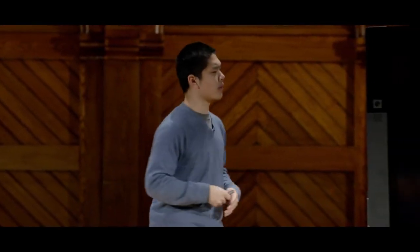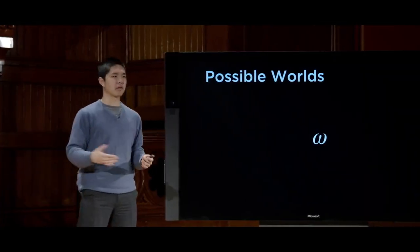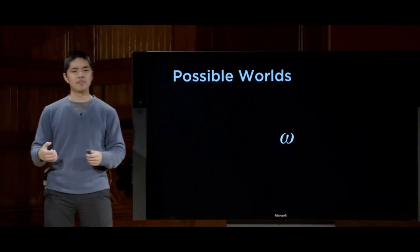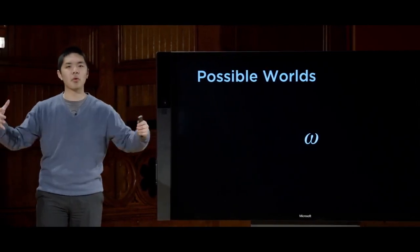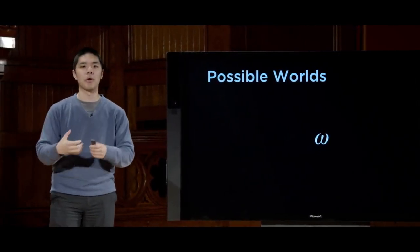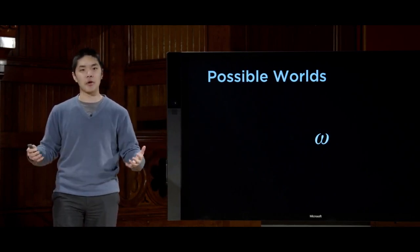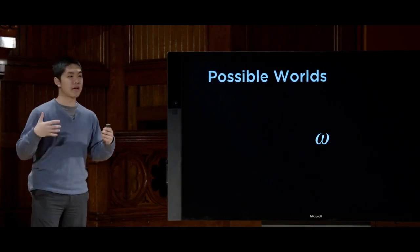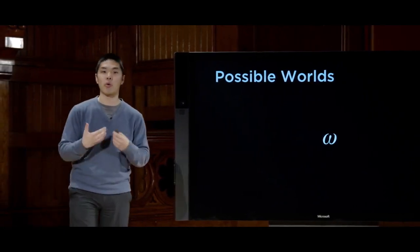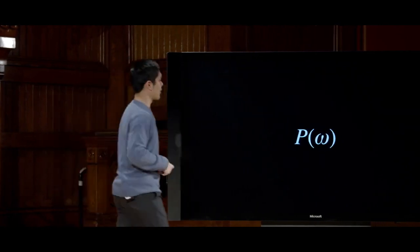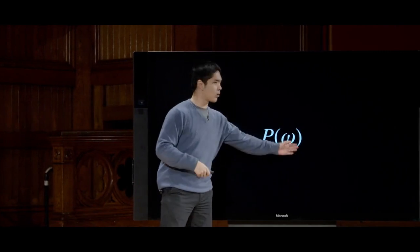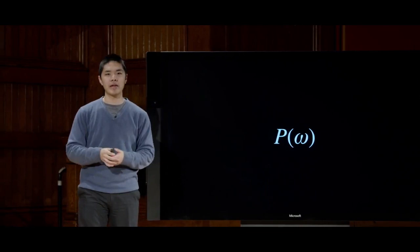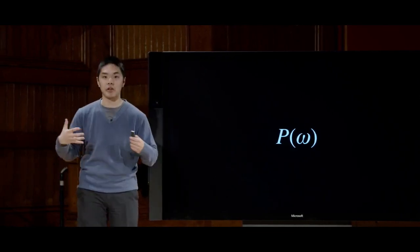Probability ultimately boils down to the idea that there are possible worlds, represented using the Greek letter omega. When I roll a die, there are six possible worlds that could result — I could roll a 1, 2, 3, 4, 5, or 6. Each of those is a possible world, and each has some probability of being true. We represent that probability using the capital letter P, and in parentheses what we want the probability of — so P(ω) is the probability of some possible world omega.